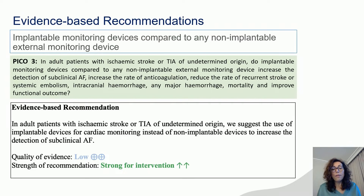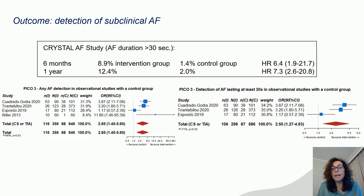For our third PICO, we compared the implantable monitor device with any non-implantable external monitor device. We suggest the use of the implantable monitoring device to increase the detection of subclinical AF, with a low quality of evidence but a strong recommendation. This is mainly based on the CRYSTAL-AF randomized trial, in which the intervention group included patients with an implantable loop recorder, and the rate of detection in the intervention group was significantly higher.